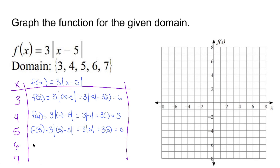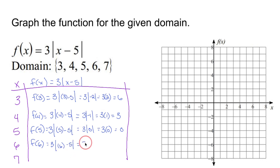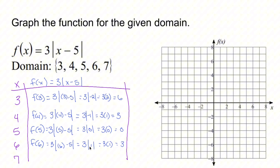Let's try for six. F of six is going to equal three times the absolute value of six minus five. Six minus five inside the absolute value is one. The absolute value of one is one, so three times one is three. You'll notice those numbers are going back up — that's supposed to happen. Remember, absolute value always makes something positive.